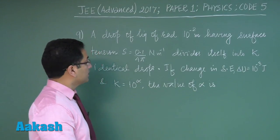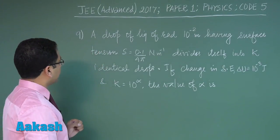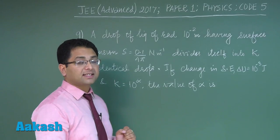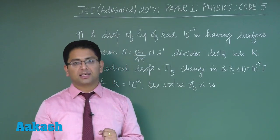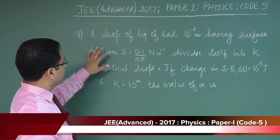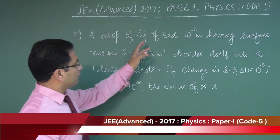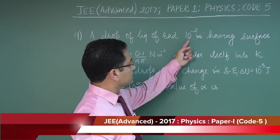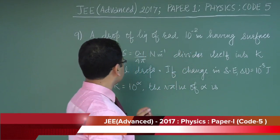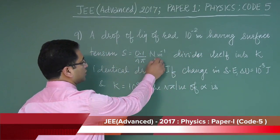Let's look at question number nine from the topic surface tension, properties of bulk matter. The question is: a drop of liquid of radius 1 cm having surface tension S = 0.1 N/m